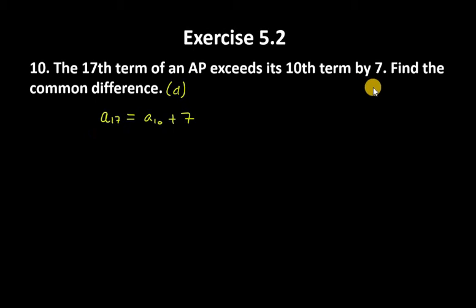First of all, we define A17. How can we write it? A plus 16D, with the help of the An formula, which is A plus (n minus 1) times D.